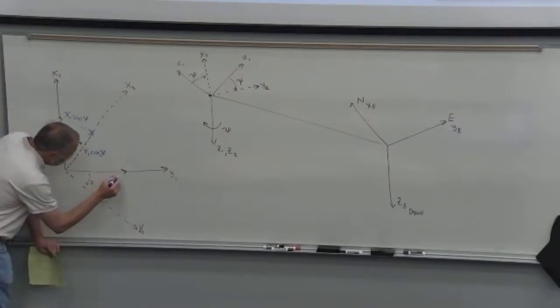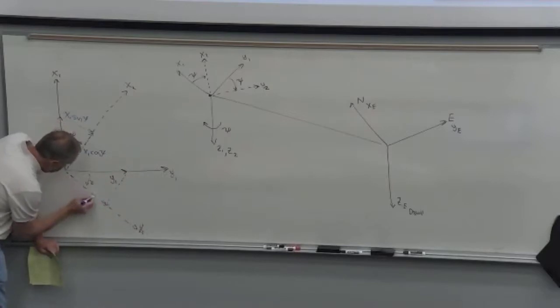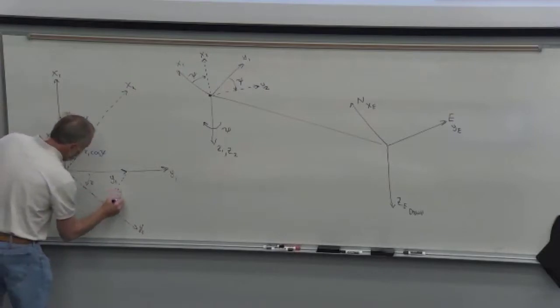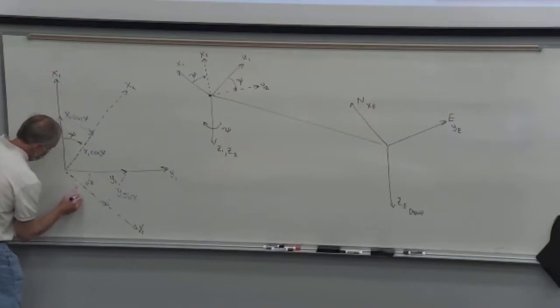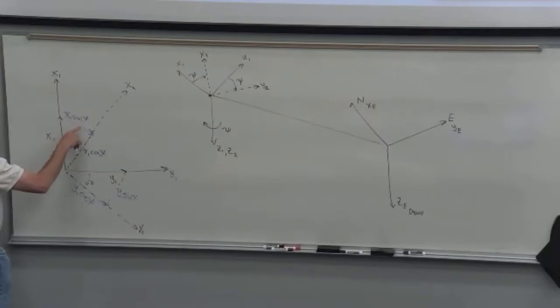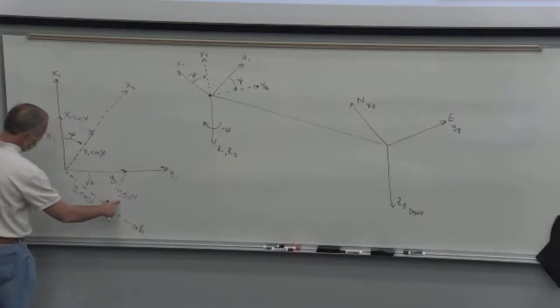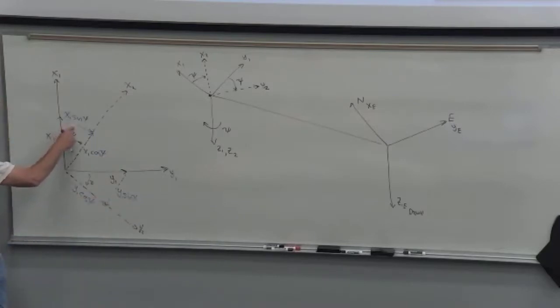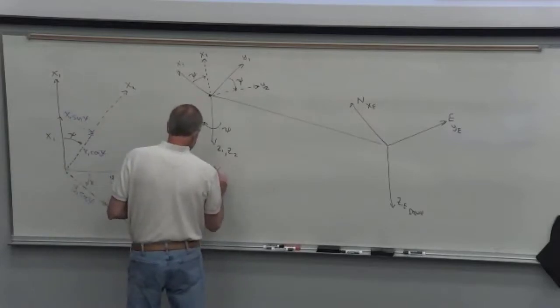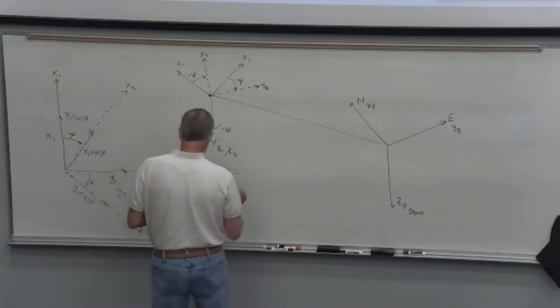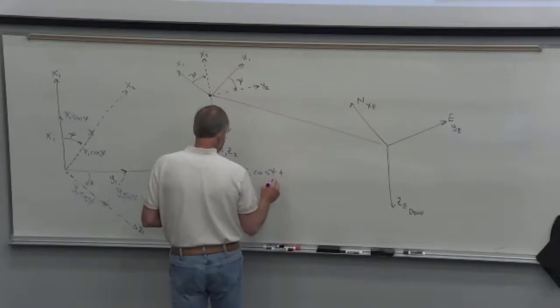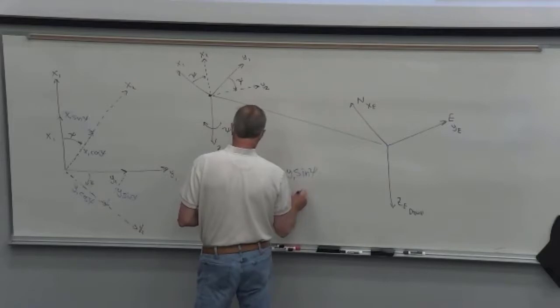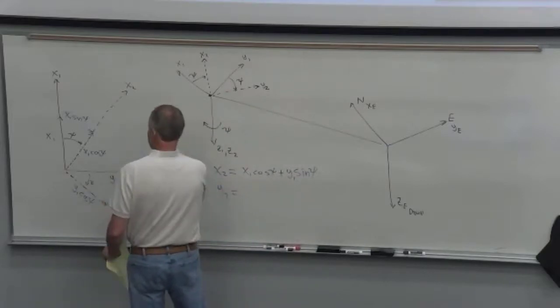The same thing with y1. We project it onto the x and y coordinate system, the two coordinate system. So this is y1 sin psi, and this is y1 cos psi. There's where we get the new components in the x and y directions. This is the x2 component of x1, and this is the x2 component of y1. Then this is the y2 component of x1, and this is the y2 component of y1. So we get that x2 is...